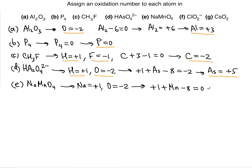Solving for manganese: plus 1 plus Mn plus 4 times negative 2 (which is negative 8) equals 0. So 1 minus 8 is negative 7; adding 7 on both sides gives manganese an oxidation number of plus 7. Those are the individual oxidation numbers for each atom.